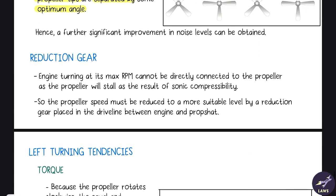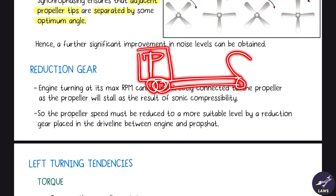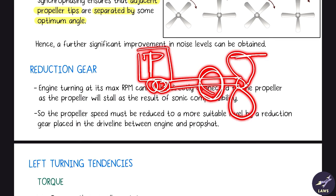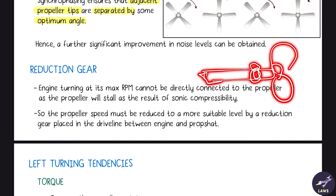The reduction gear sits between the propeller and the crankshaft. If the crankshaft were connected directly to the propeller, the high speed could cause the propeller tips to stall due to compressibility effects. The reduction gear causes the propeller to rotate at a slower speed than the engine.